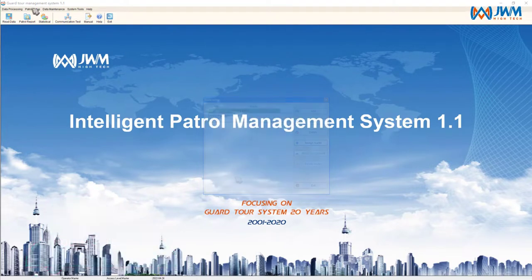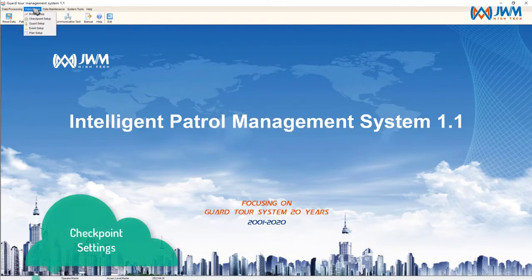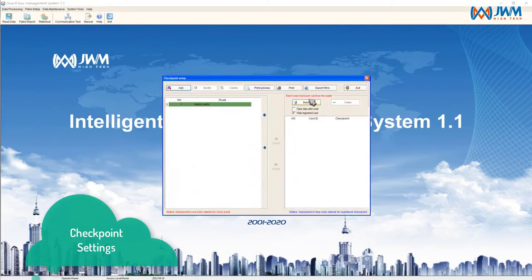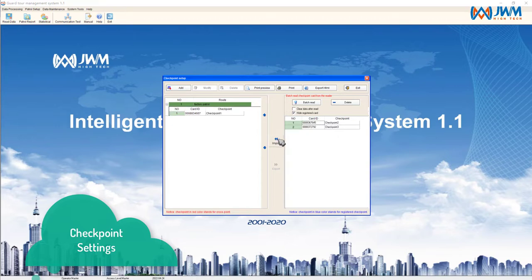The second step is to do the checkpoint setup. Use your device to scan the checkpoints one by one, then click batch read, select the checkpoints, and edit them.